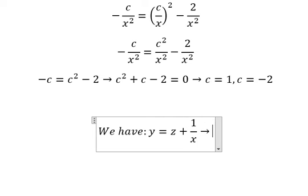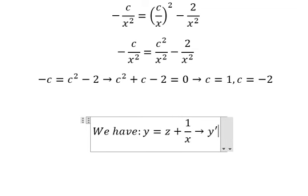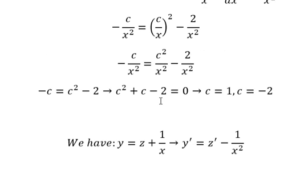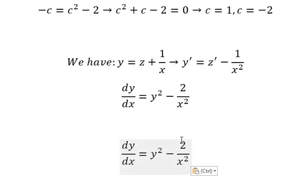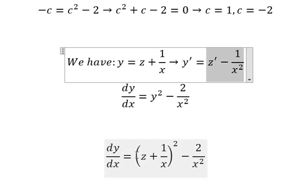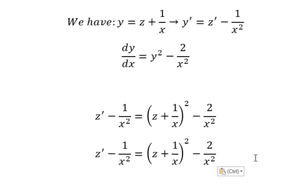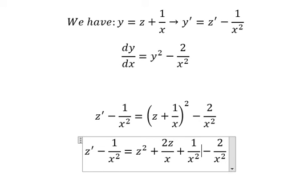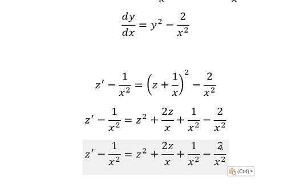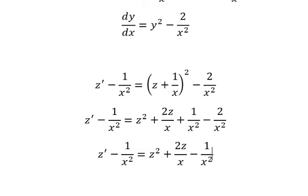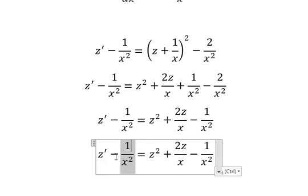If we do the first derivative for both sides we get the derivative of y. Now we go back and substitute this into the equation. After expanding and simplifying, we get one minus two, which gives us negative one over x squared. Then we simplify negative one over x squared for both sides.